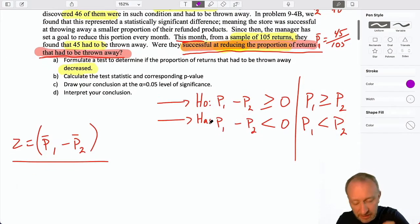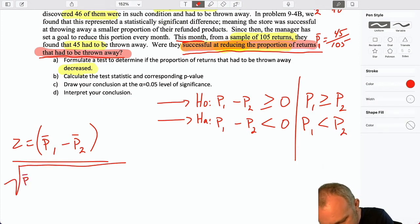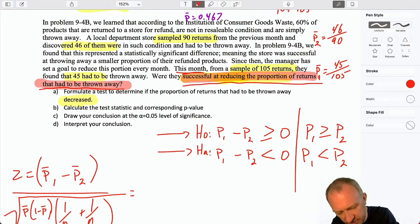So why do I need that? Well, because in this formula for our test statistic, that standard error is reliant on that pooled estimator. And here's 1 over N1 and N2. So we have for P-bar 1, 45 over 105, this is going to be 0.429, minus P-bar 2, which is 0.511.